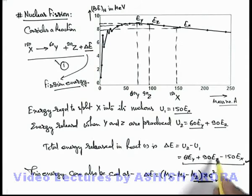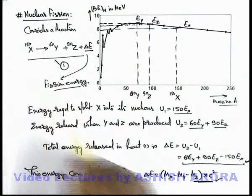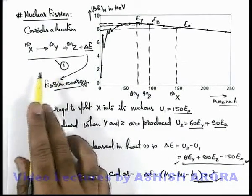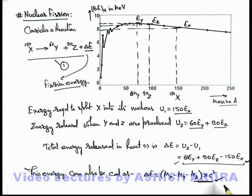If you are available with the binding energy per nucleon of the nuclei taking part in the reaction, you can use this method. And if you know the exact masses of the nuclei, you can use mass defect to calculate the Q value of the reaction.